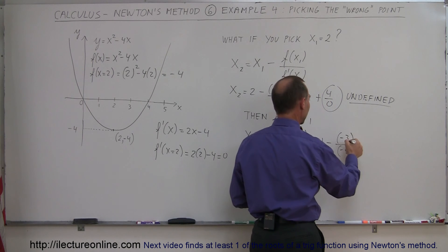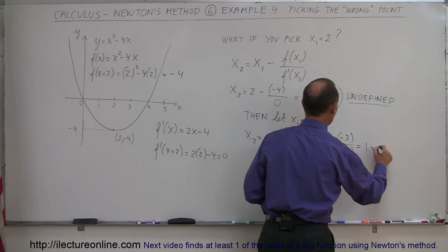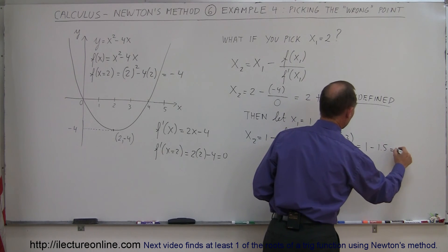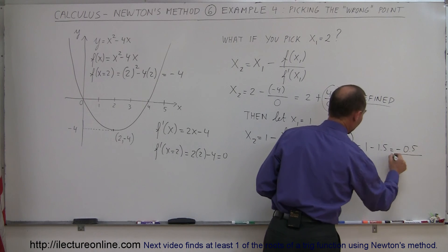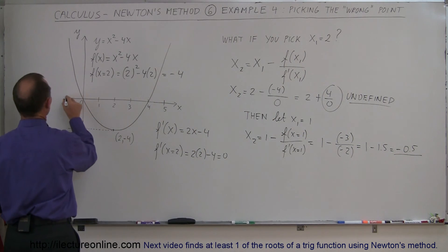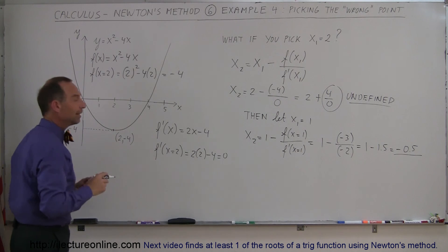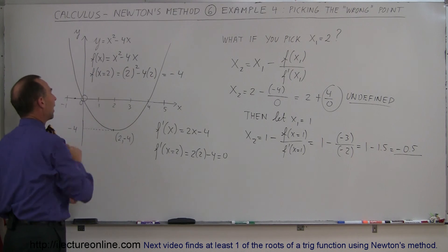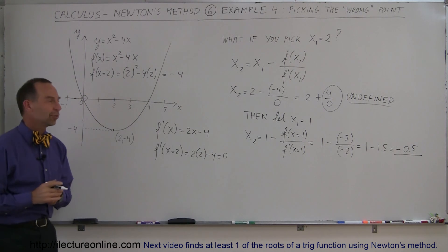So we end up at 1 minus 3 over 2 or 1.5, which is equal to minus 0.5. So my next point would be minus 0.5, which would place you somewhere between 0 and negative 1, so right at the halfway point. And then you would continue the process, and then you would very quickly zero in on this root right here, where x equals 0.